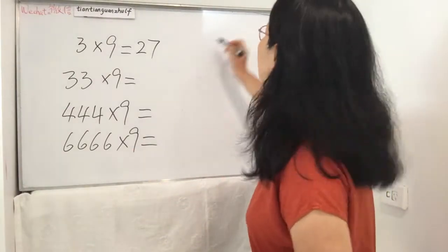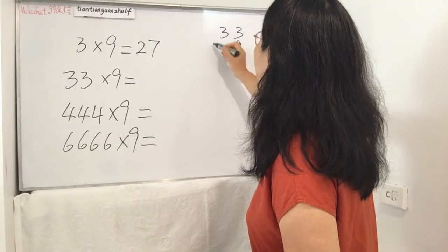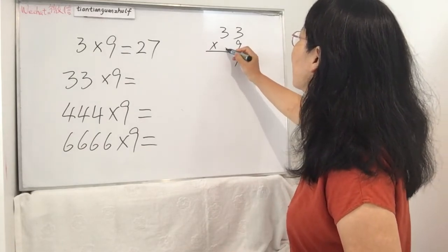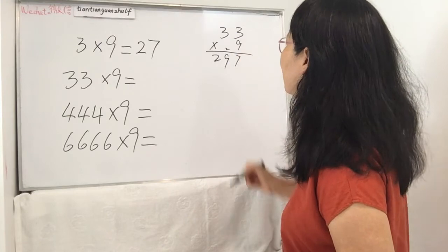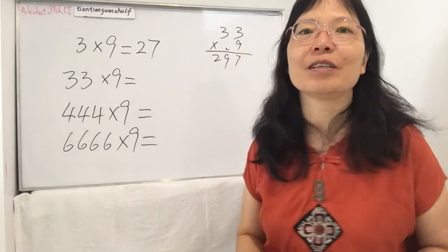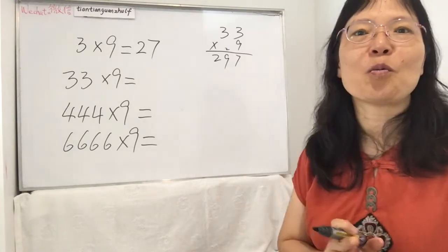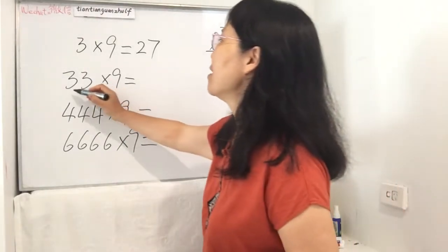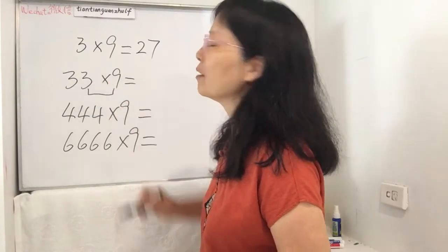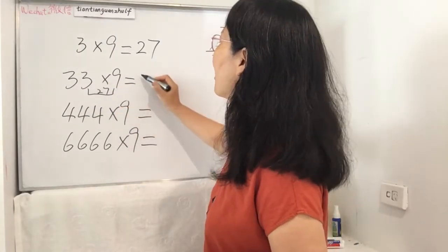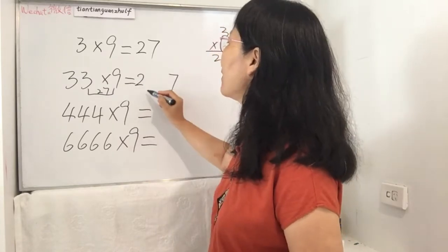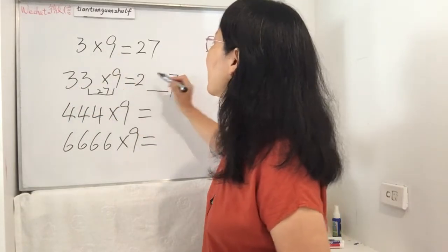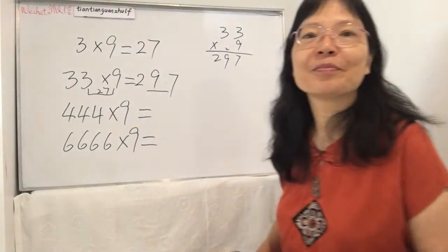Original way, traditional way. 3 times 9, let's see what is the answer. 9 times 3 is 27. The answer is 297. Now I'm going to show you the very special way where you can work very fast.